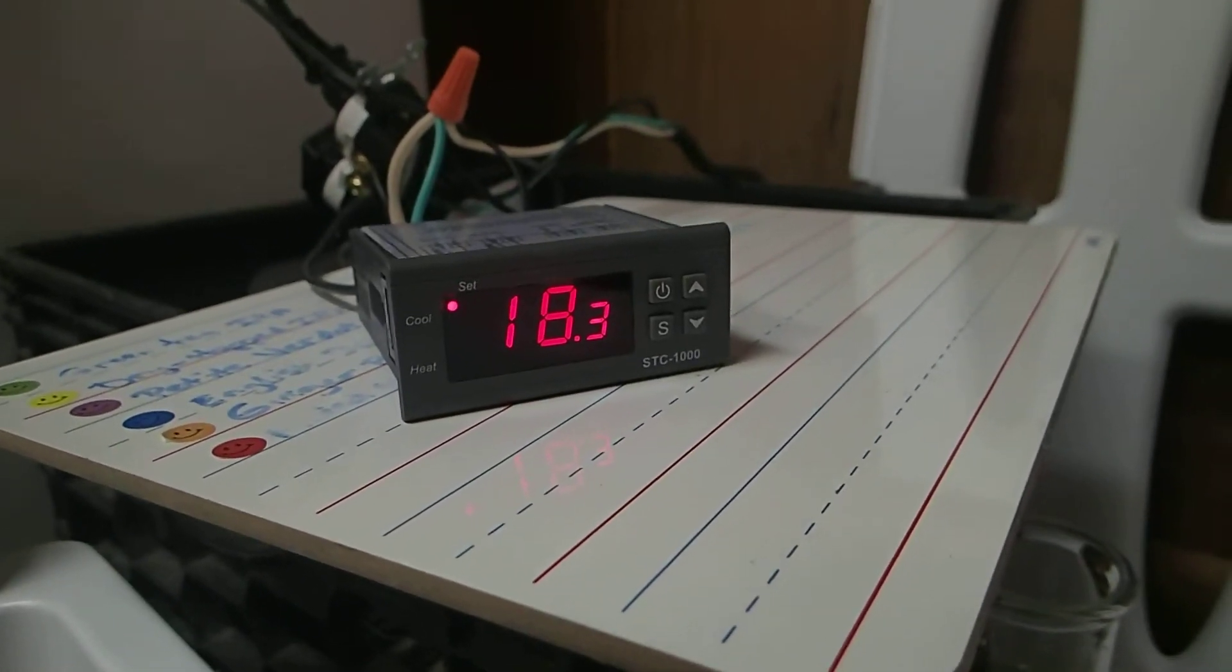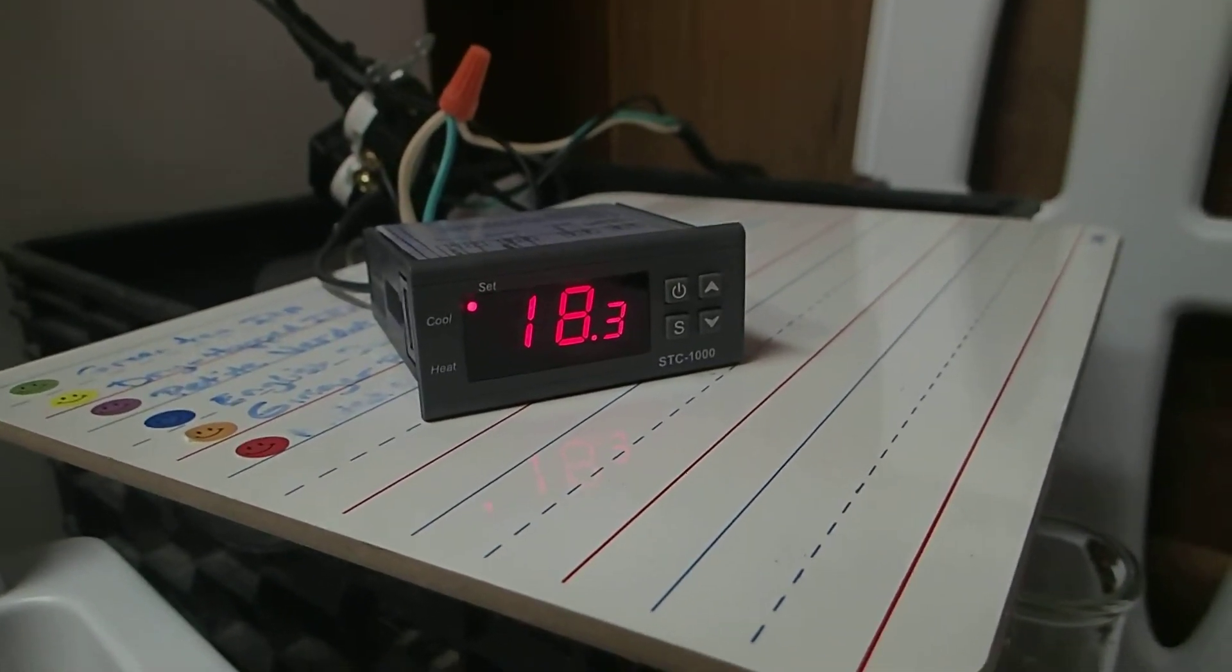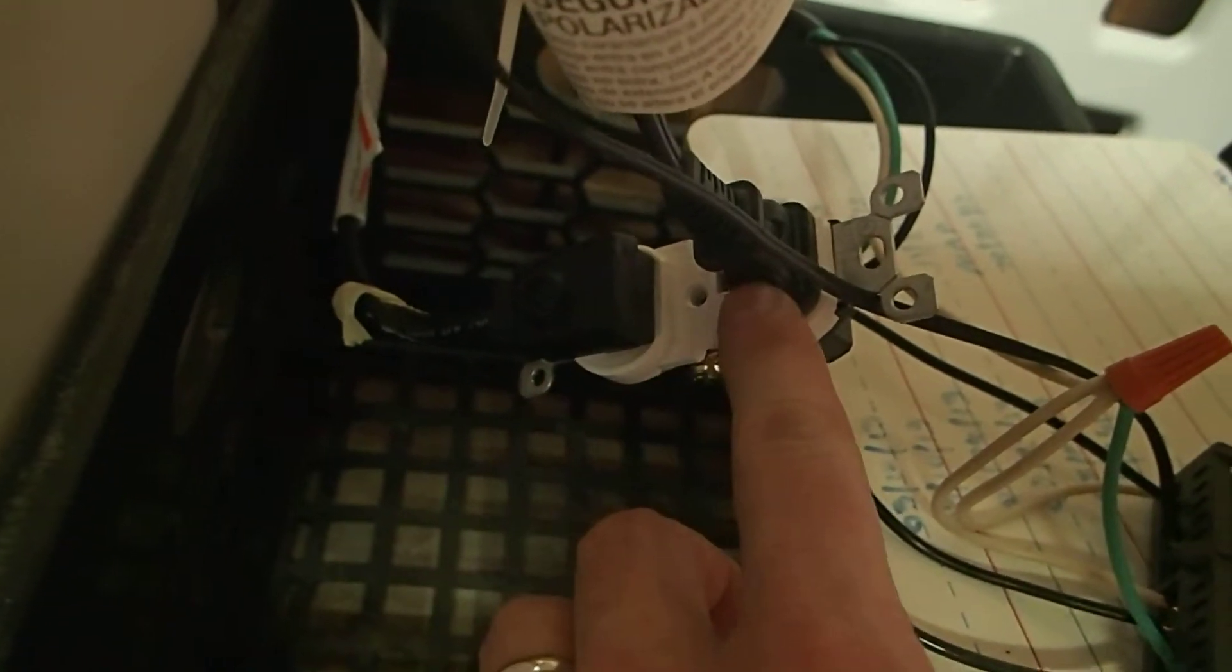Here we have our temperature controller. Right now the wiring is a little messy, but as you can see there are two outlets. One right here is the chest freezer, and this one here is a reptile lamp.